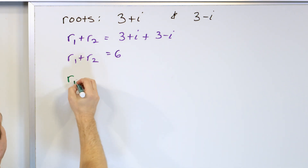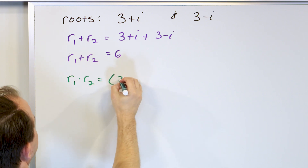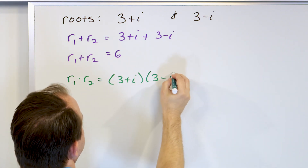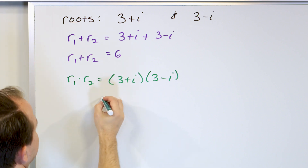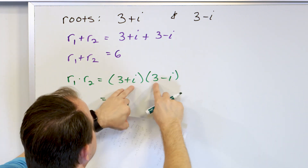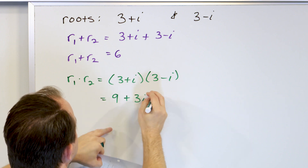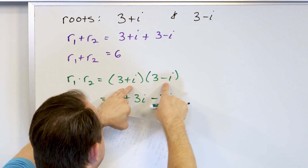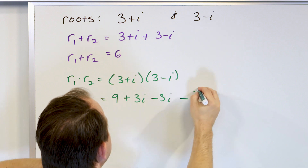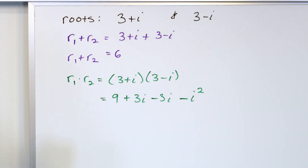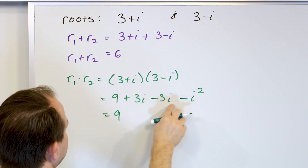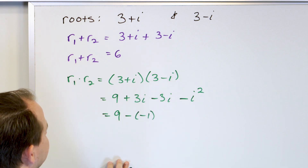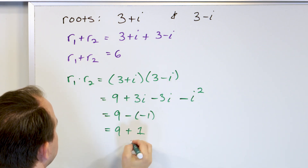Next, find r1 times r2. You have to be careful — it's (3 plus i) multiplied by (3 minus i), and you have to do FOIL. Three times 3 is 9. This gives 3i, and this gives negative 3i. The last term: negative times positive gives a negative sign, and i times i is i squared — don't substitute yet. So you have 9, the 3i terms cancel to zero, then the minus sign from here, and i squared is negative one. So you have 9 plus 1, which gives 10. So r1 times r2 equals 10.